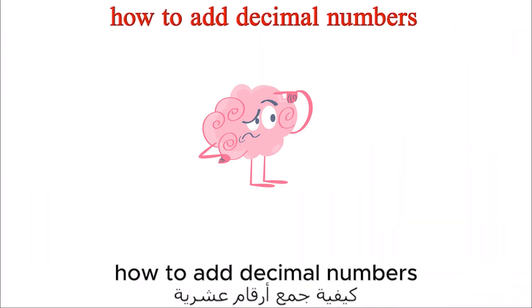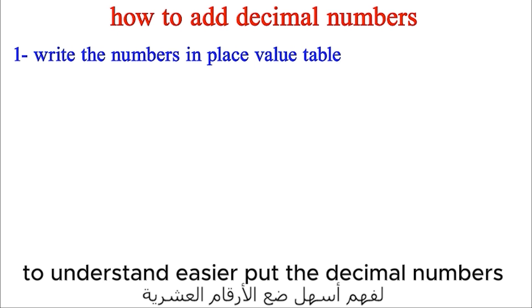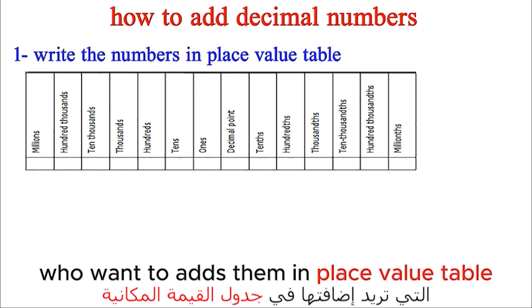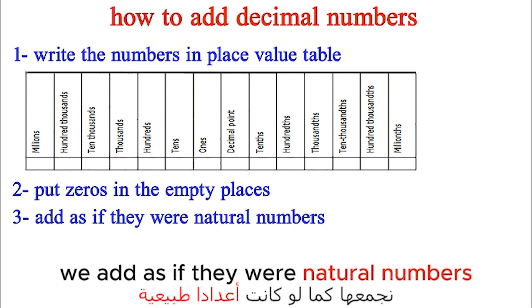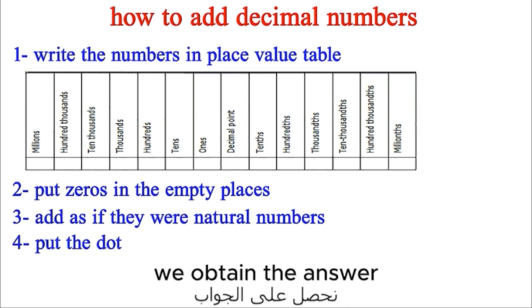How to add decimal numbers. To understand easier, put the decimal numbers you want to add in a place value table. We put zeros in the empty places, we add as if they were natural numbers, put the dot, and we obtain the answer.